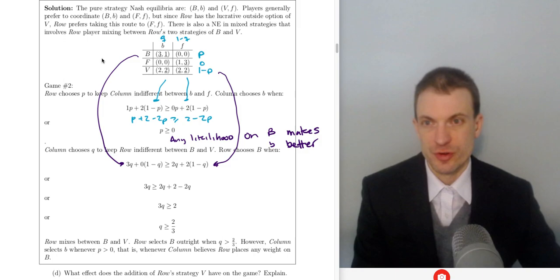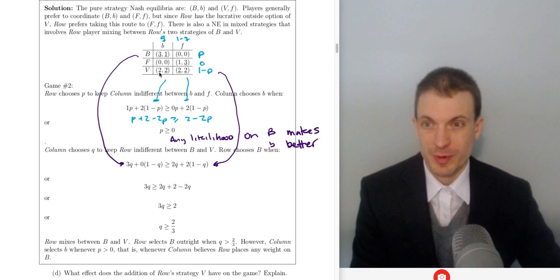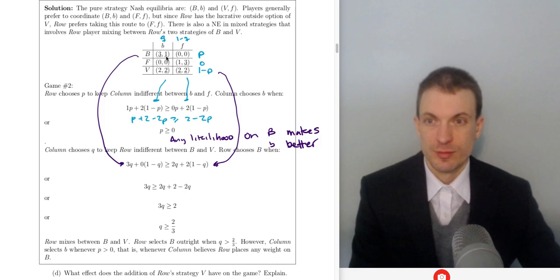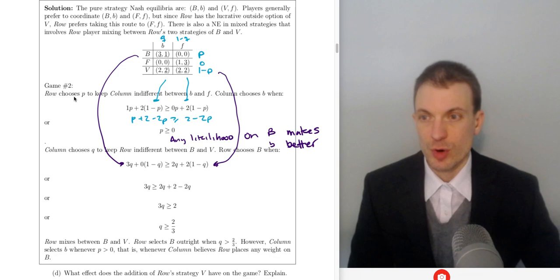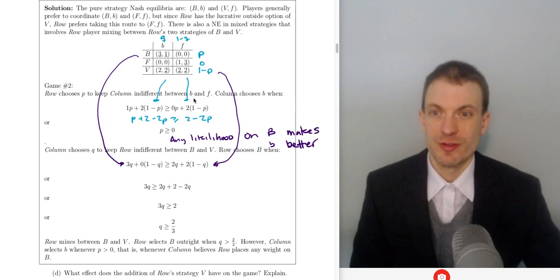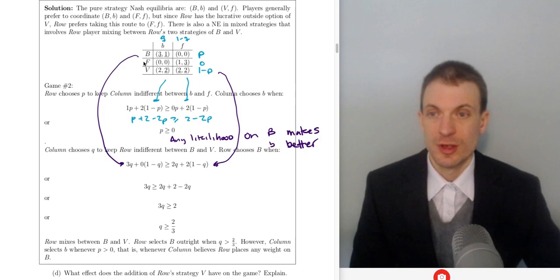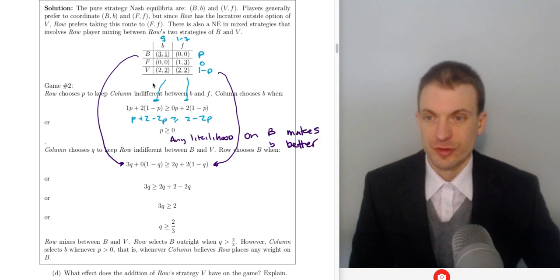In game two, find pure and mixed strategy Nash equilibria. Pure strategy Nash equilibria are going to be BB and VF. Suppose column player chooses little b — what does row player want to do? Big B, because 3 is bigger than 0 and 2. If column player chooses F, what does row player want to do? V, because 2 is bigger than 1 and 0. If row player chooses B, what does column player want to do? B, because 1 is bigger than 0. If row player were to choose F, what does column player want to do? F, because 3 is bigger than 0. If row player does V, column player is indifferent between B and F, so we'll underline both. Row is going to choose P — their mixture over B and V — to keep column indifferent between B and F. I've put probability zero on F because F is dominated by V and by some combination of B and V, so we won't have any mixture involving F for row player.